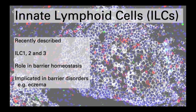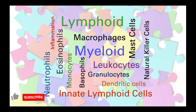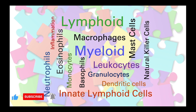So that's a summary of the innate immune cells, and some of the many different roles that they can carry out in the innate immune response. In the next video, we will start to look at some of the soluble mediators of the innate immune response, and how these act in tandem with the cells of the innate system to help defend our body from threats.